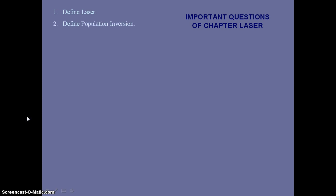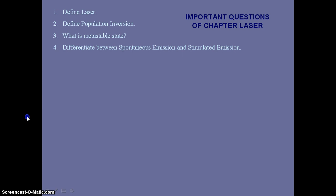We will start with the first chapter, that is laser. The important topics related to this chapter: first, define laser — it is a two-mark question; next, define population inversion — also two marks; what is metastable state — again two marks; then differentiate between spontaneous and stimulated emission — three or four marks.